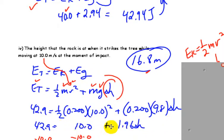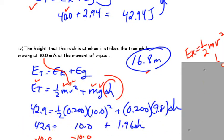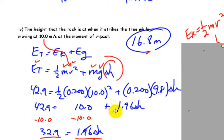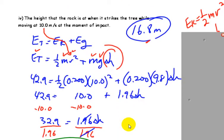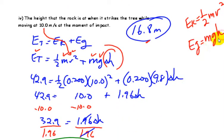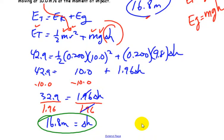Then it becomes a grade 9 rearrangement type equation. So we want to isolate H. To do that, we have to isolate 1.96H first of all. So subtract 10 from each side, we'll get 32.9 equals 1.96H. Then divide each side by 1.96, and we get 16.9 meters.